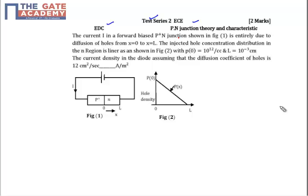The injected hole concentration distribution in the n region is linear as shown in figure 2, with ρ₀ = 10¹² per cm³. The value of ρ₀ is 10¹² per cm³ and the length L is given as 10⁻³ cm.